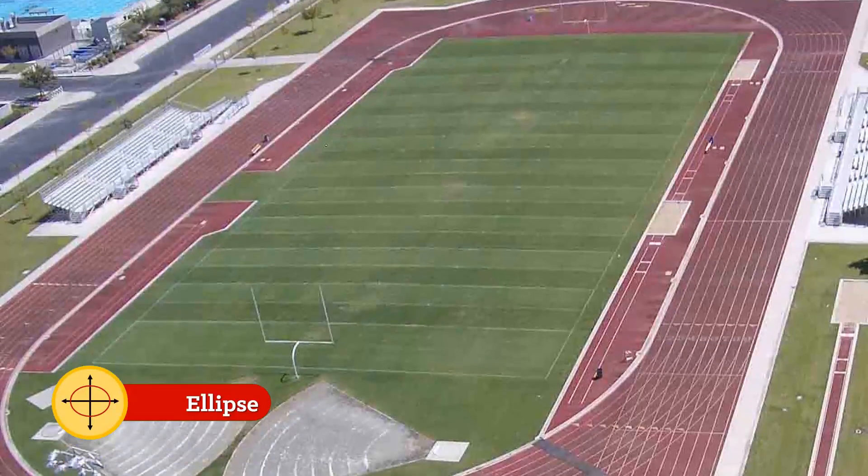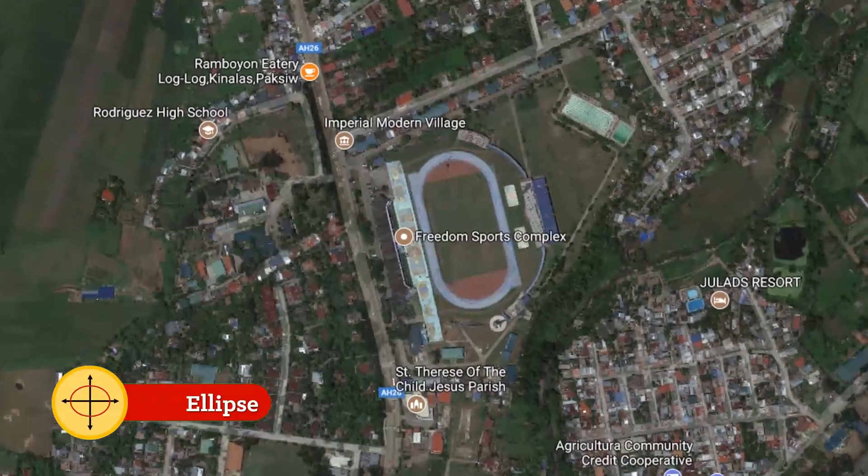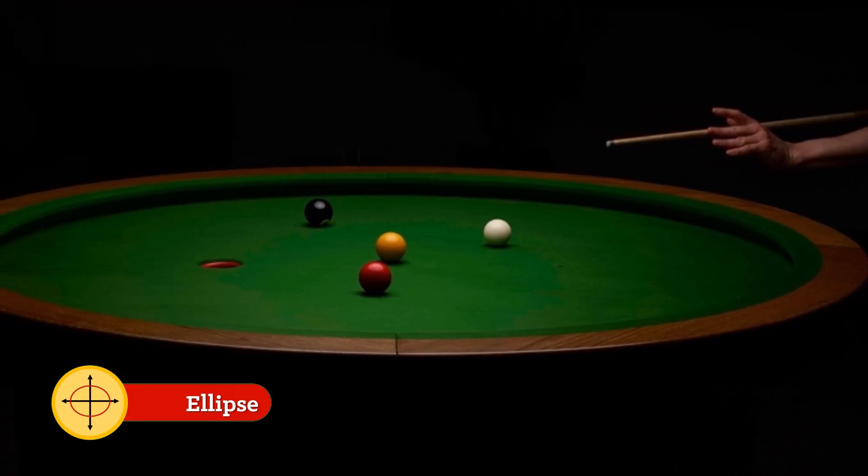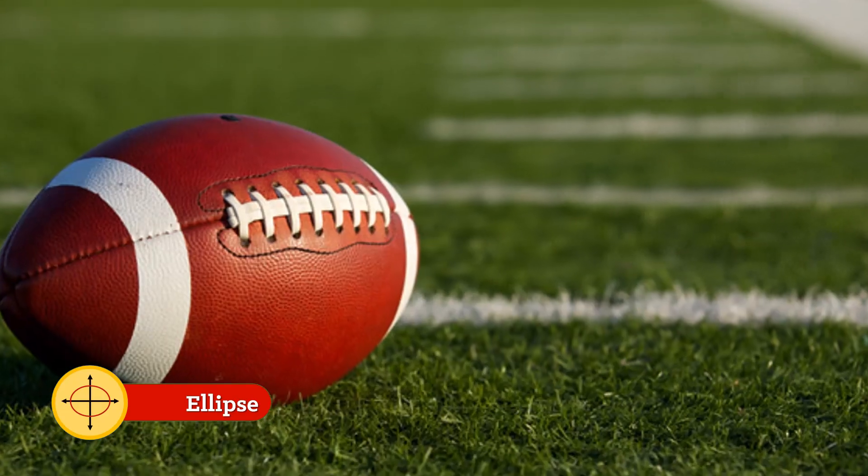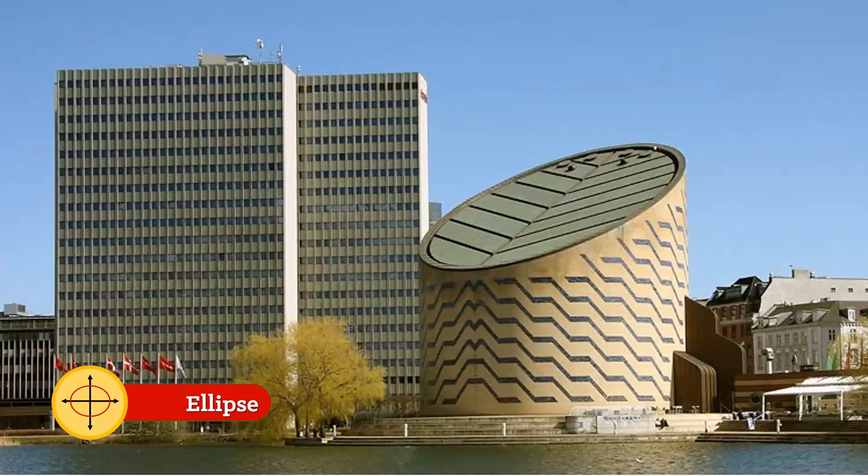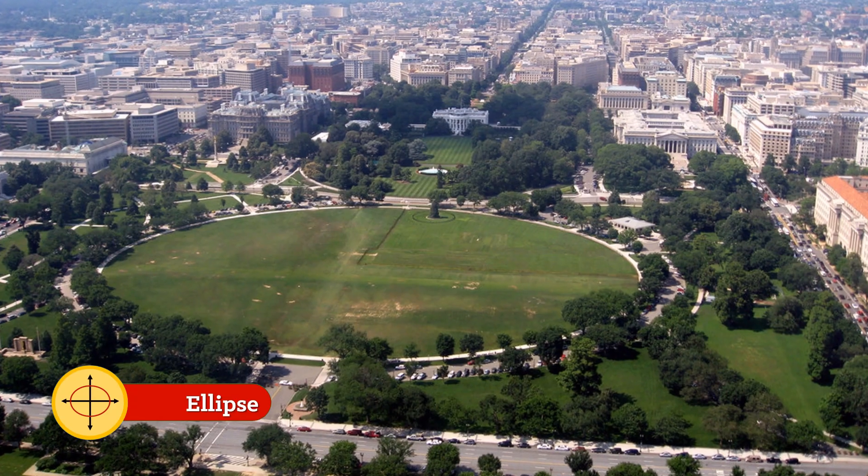Examples of ellipse include oval running tracks, elliptical billiard tables, orbits of planets, American football, T-Cubra Planetarium, and the ellipse in Washington, D.C.